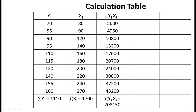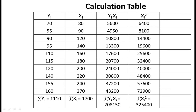Next, we multiply yi with xi and we get the summation yi·xi equal to 208150. Next, we calculate xi² and we get summation xi² equal to 325400.